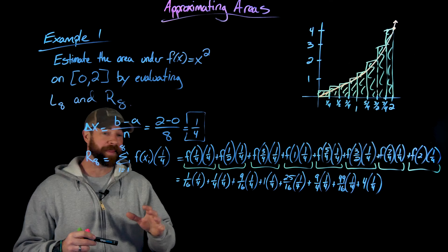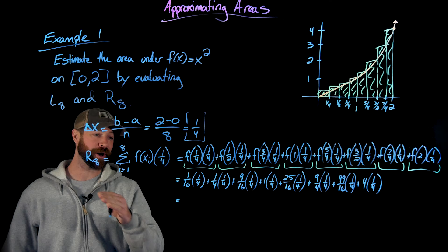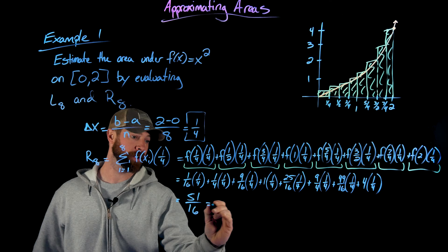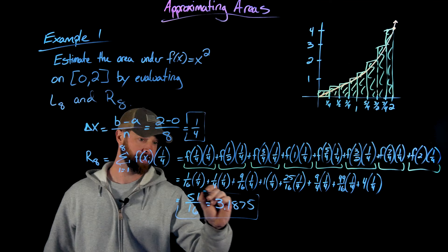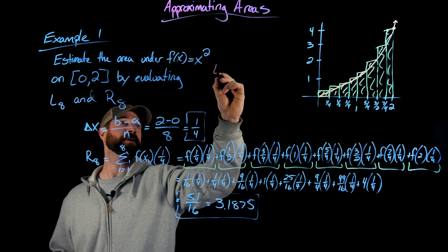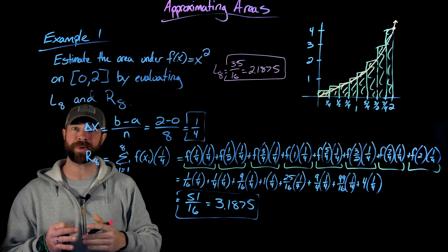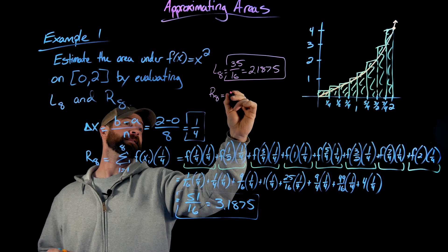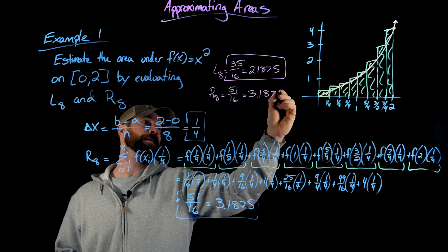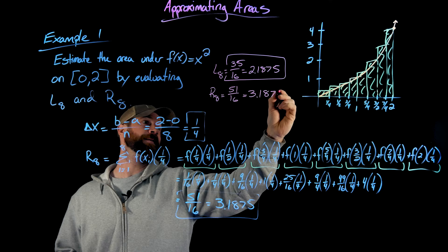Multiplying and adding all these values together, the right endpoint R8 estimation for this area is 51/16, which equals 3.1875. To recap: L8 was 35/16 = 2.1875 as a lower bound, and R8 is 51/16 = 3.1875. This gives us a very accurate range for the area under the curve of x squared between zero and two.